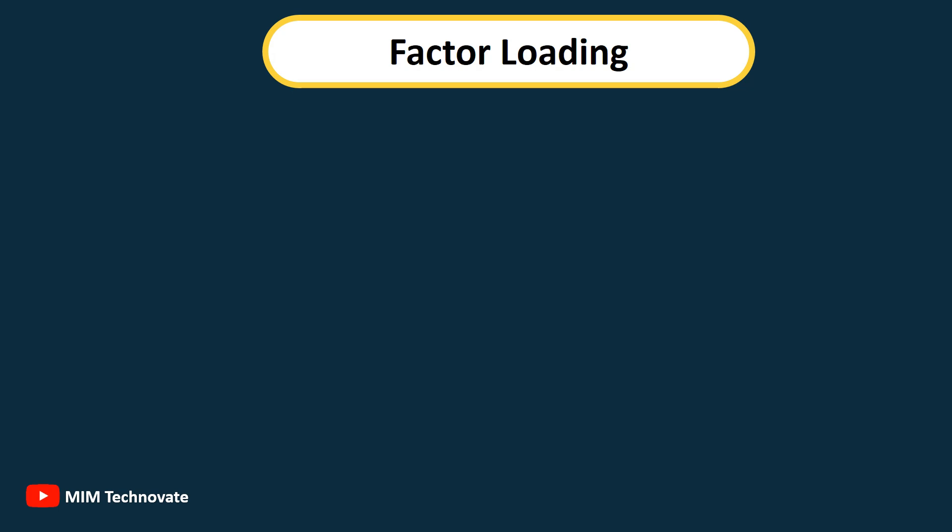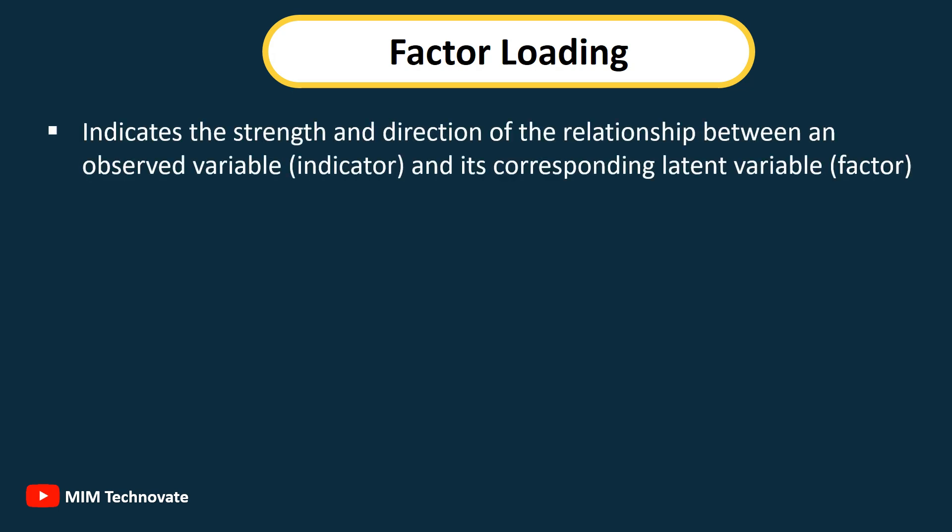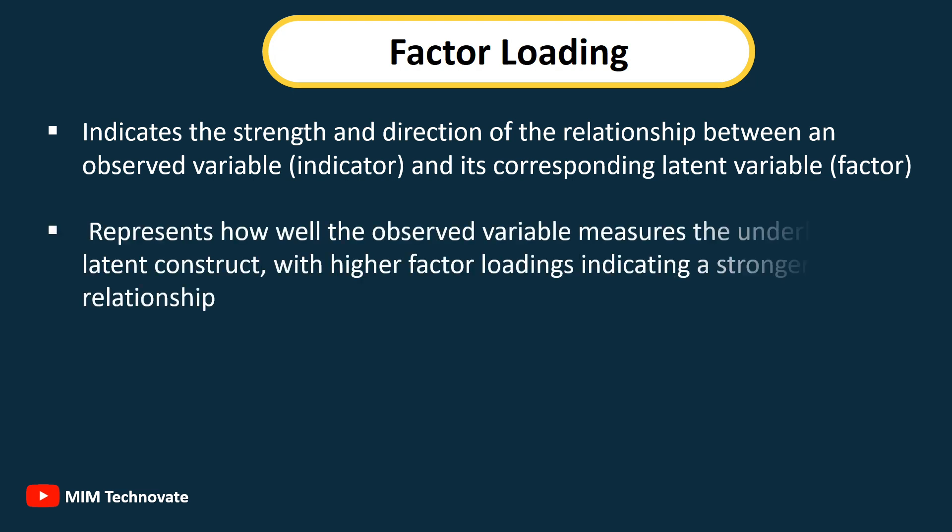Factor Loading: Indicates the strength and direction of the relationship between an observed variable (indicator) and its corresponding latent variable (factor). It represents how well the observed variable measures the underlying latent construct, with higher factor loadings indicating a stronger relationship.